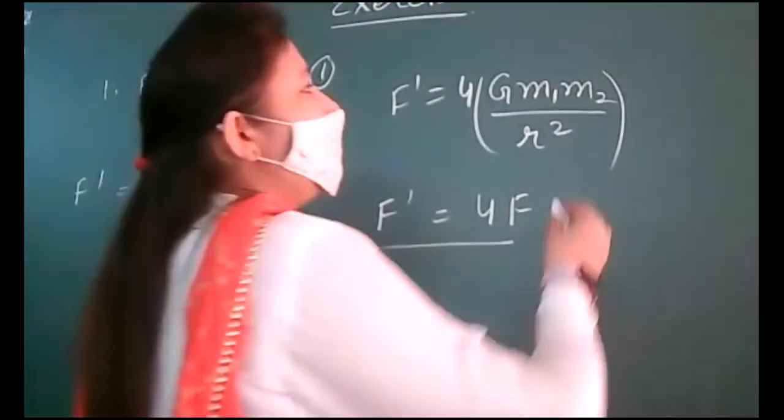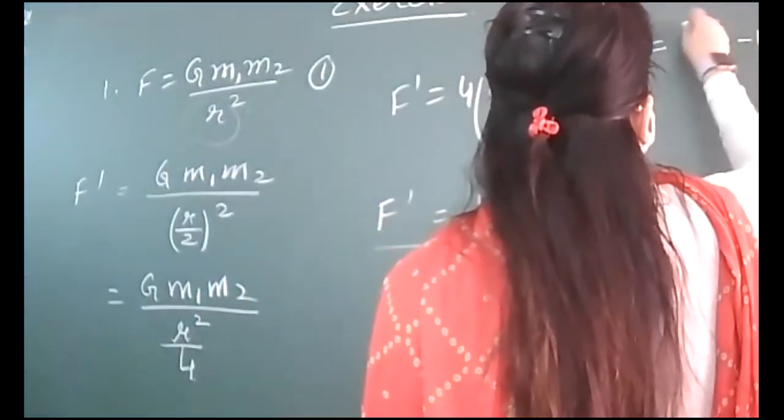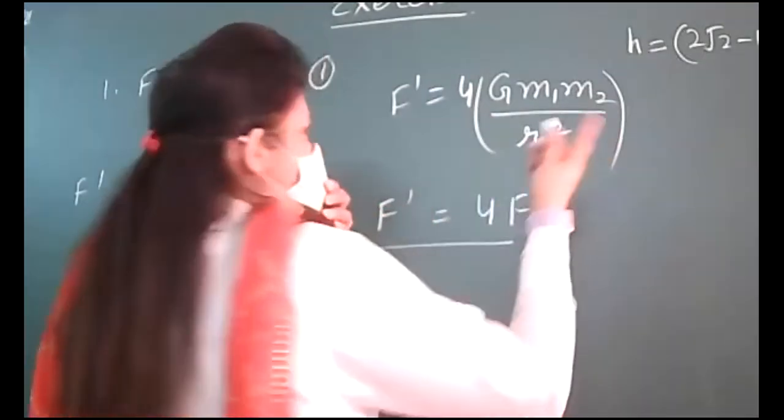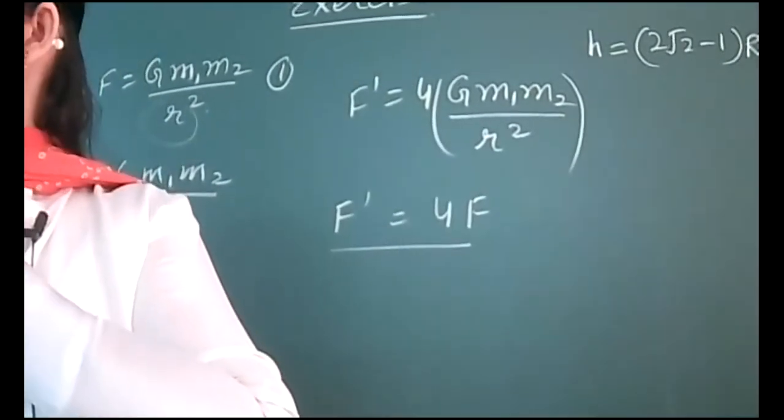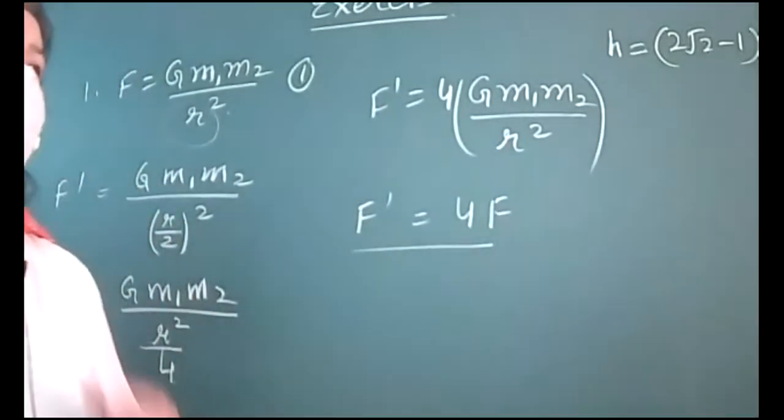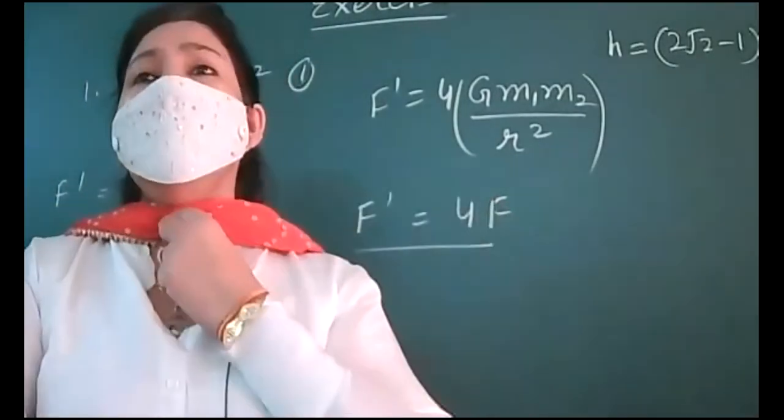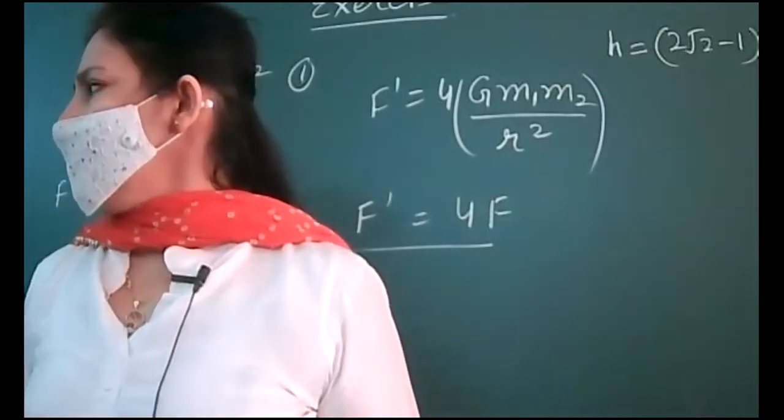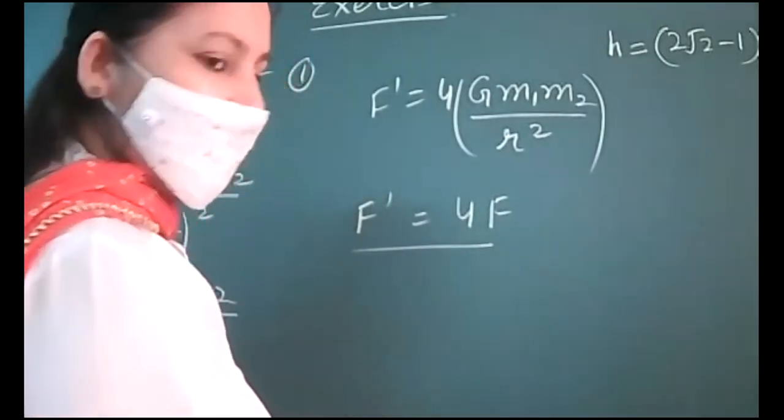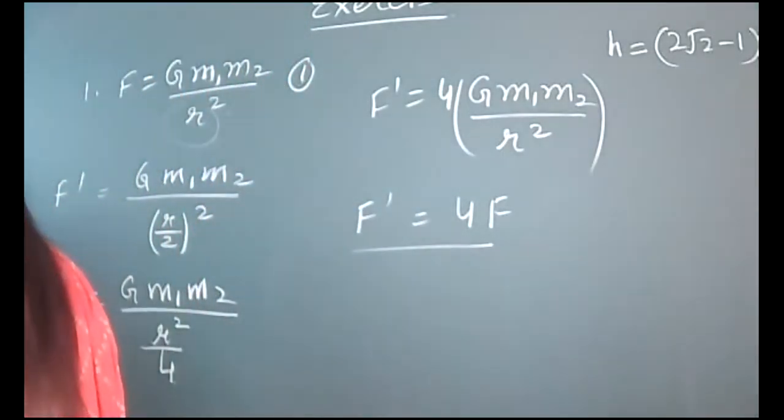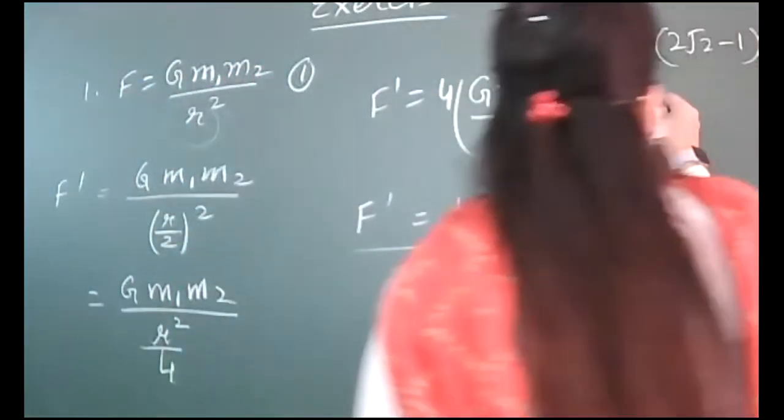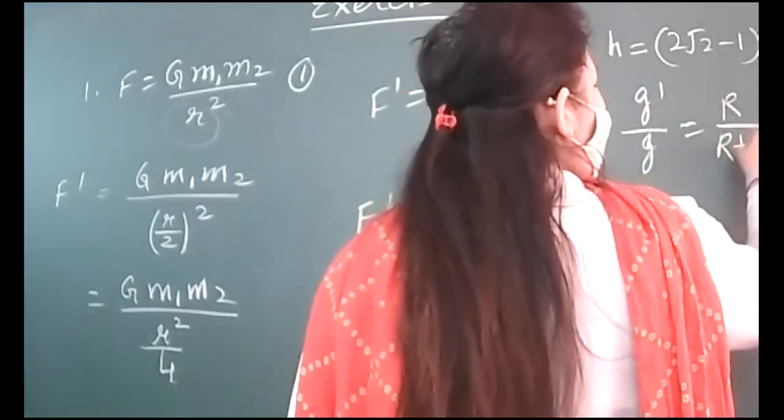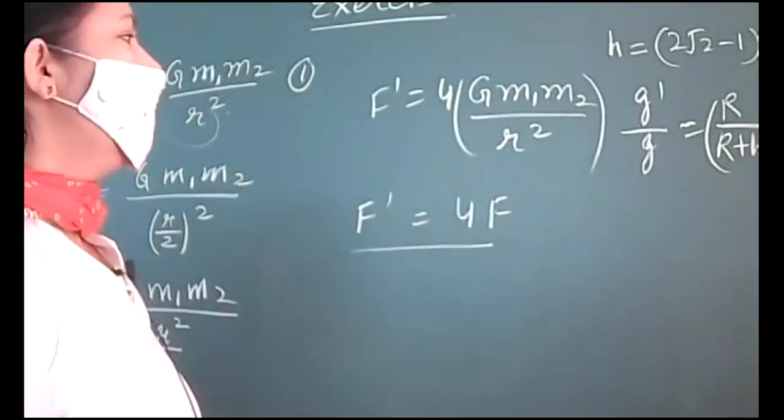So, the numerical that I gave to you was 2 root 2 minus 1 into R. You can also put radius of Earth 6400 km. How many of you have got the right answer? Only one? The question was, at what height from the surface of Earth, g reduces to 1 eighth of its value on the surface?